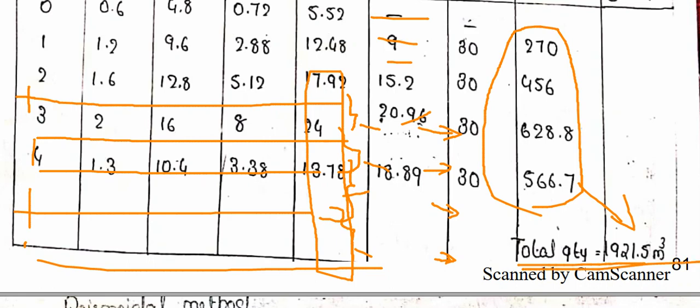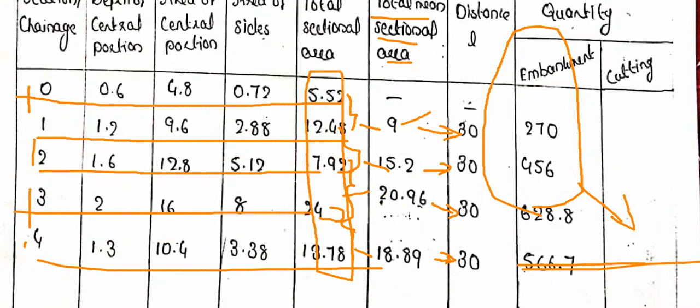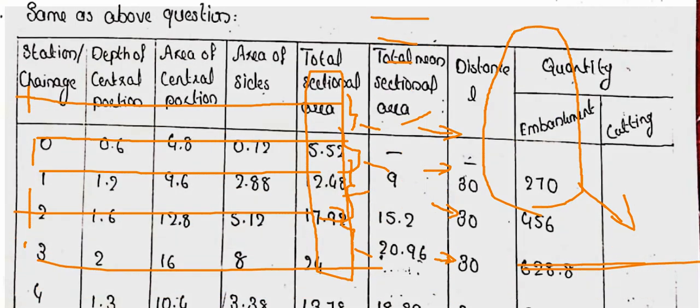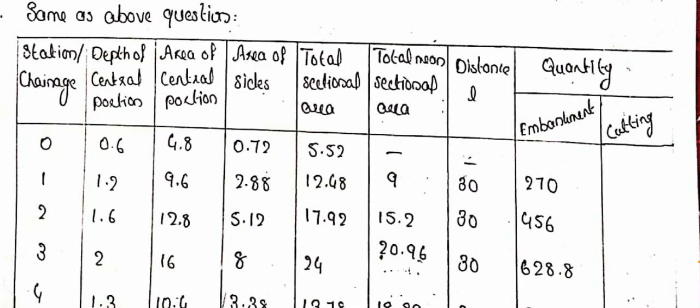The total earthwork quantity using the Mean Sectional Area Method is 1921.5 cubic meters. In this method, the individual sectional areas are calculated first, then averaged between consecutive stations, and finally multiplied by the distance to get the volume. This concludes the Mean Sectional Area Method problem.